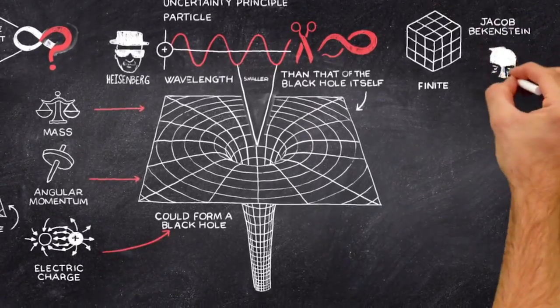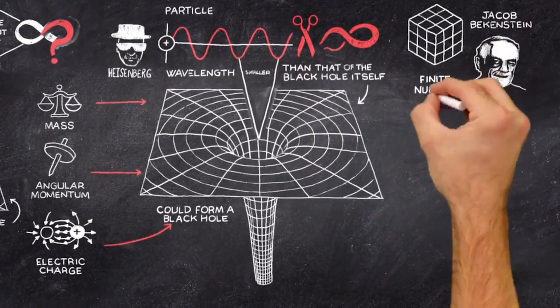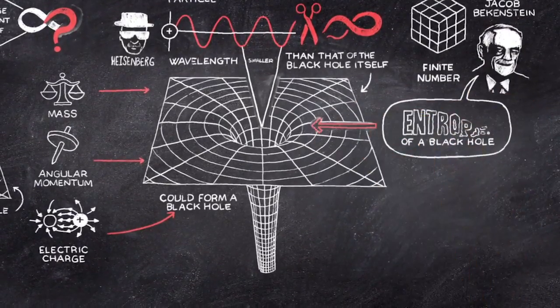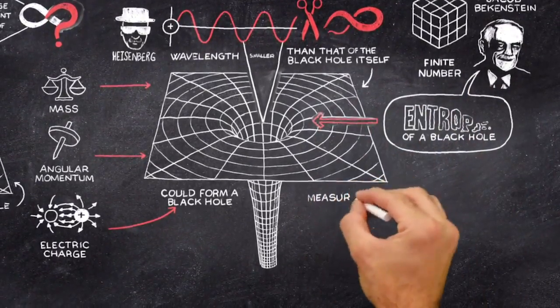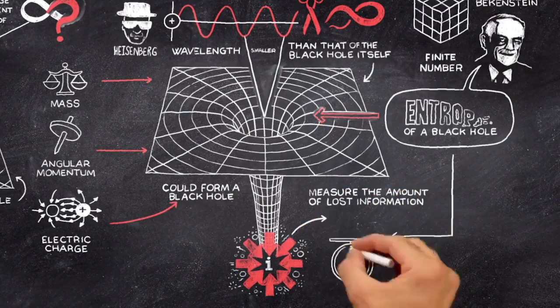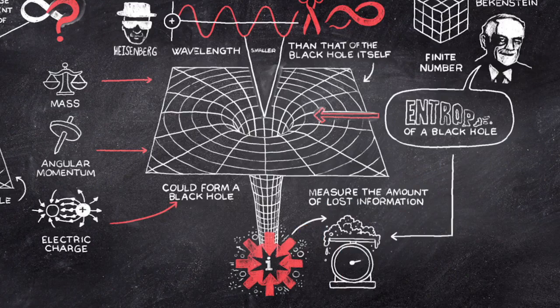Jacob Bekenstein suggested that from this finite number, one could interpret the entropy of a black hole. This would be a measure of the amount of information that was irretrievably lost during the collapse when a black hole was created.